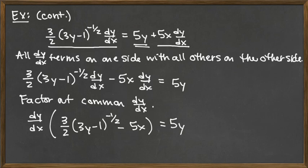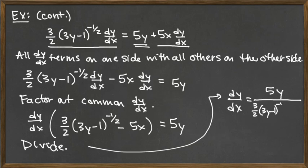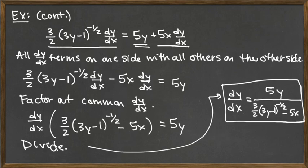Now that we have dy/dx factored out, we basically have dy/dx times stuff. So if we divide over that stuff, we get dy/dx by itself. Our last algebraic step is to divide. When we do that, dy/dx equals 5y — from the right hand side — divided by 3/2 times (3y minus 1) to the negative 1/2, minus 5x. And that is our derivative of y with respect to x for the implicit equation we began with.